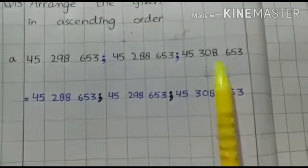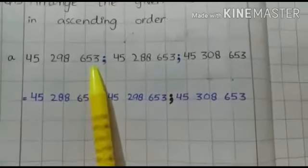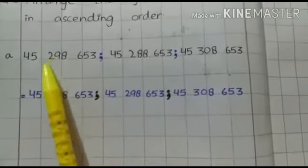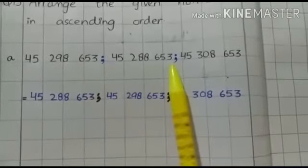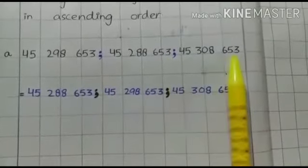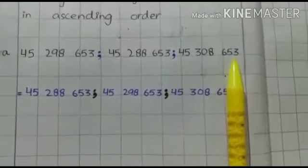So students, first you have to count the digits in 3 values: 1, 2, 3, 4, 5, 6, 7, 8. In first value we have 8 digits. In second value we have 8 digits. In third value we also have 8 digits.